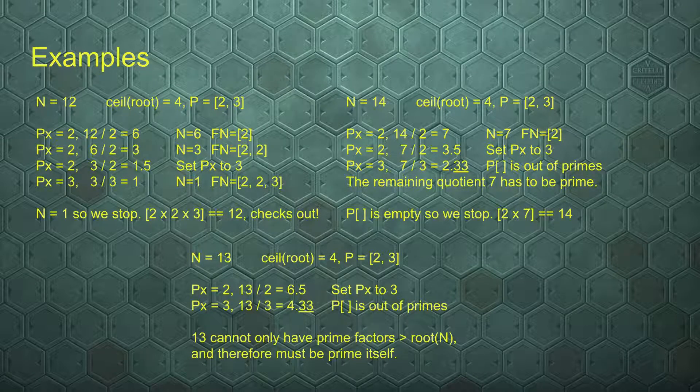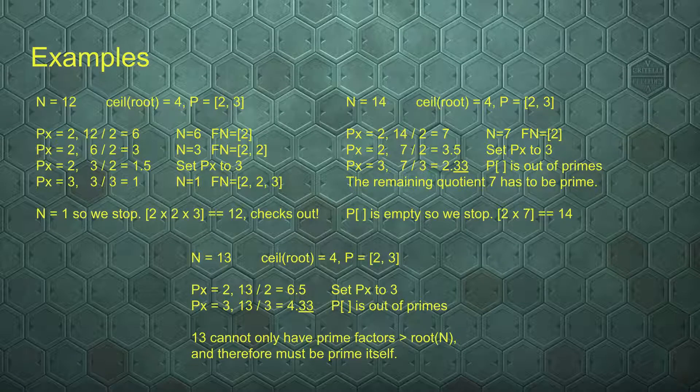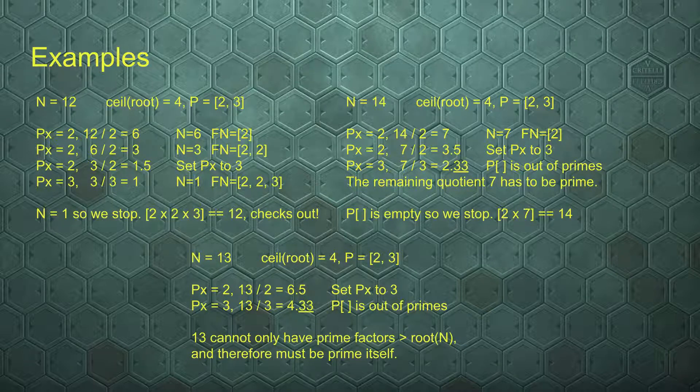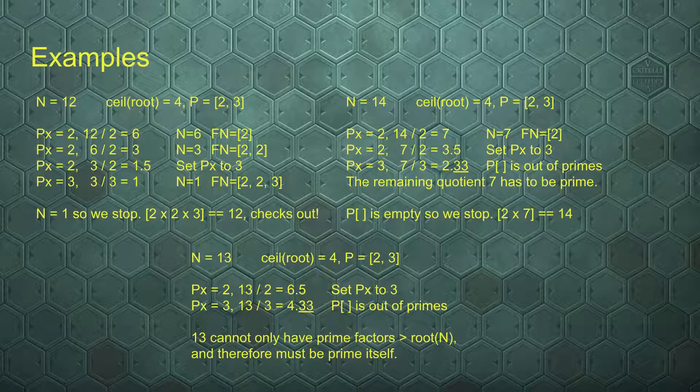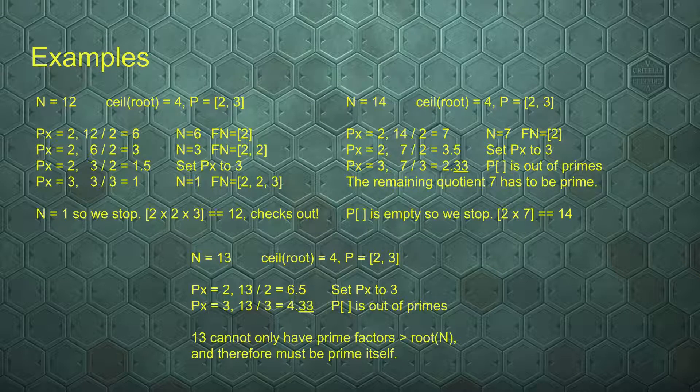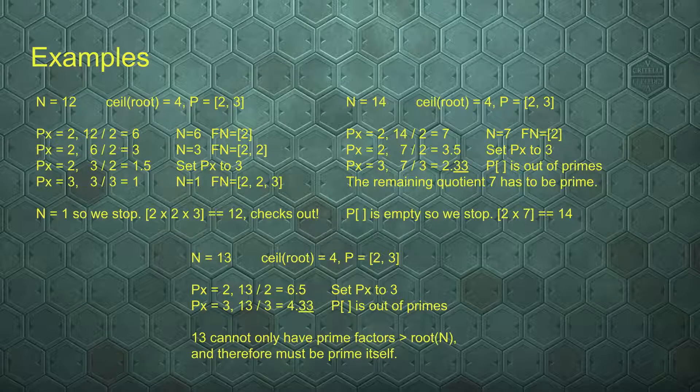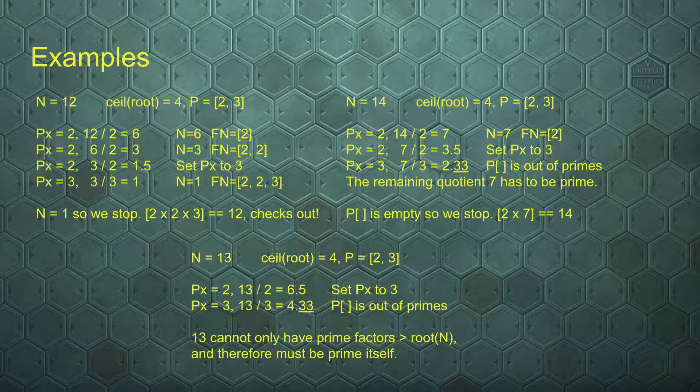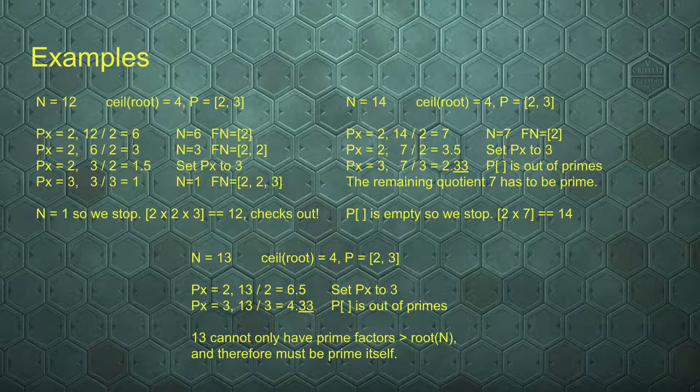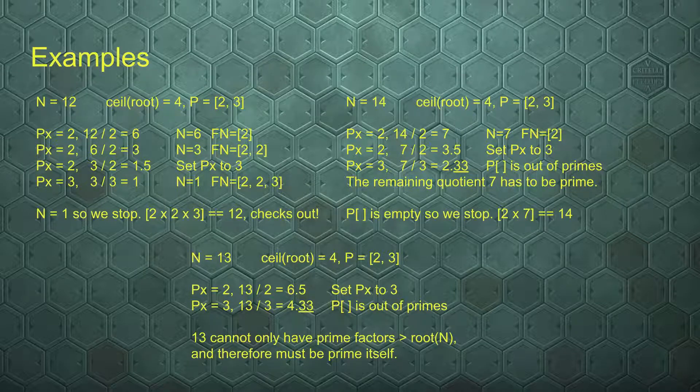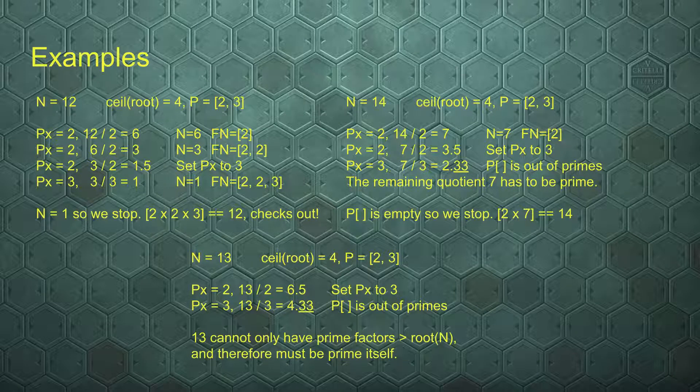Let's look at 13. Our root is 4, our primes are 2 and 3. 13 cannot be divided by 2, so we go to 3. 13 cannot be divided by 3, so whatever remains is prime. Since we found no prime factors, 13 itself must be prime.